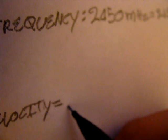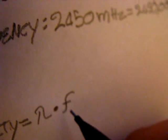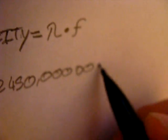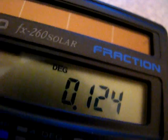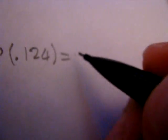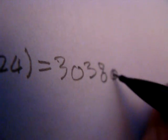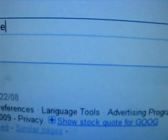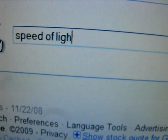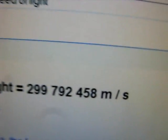The equation for velocity is velocity equals wavelength times frequency. So V equals 2,450,000,000 times 0.124, and that will give you 303,800,000 meters per second. That is really close to the speed of light — it should be around 300 million.